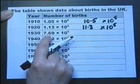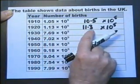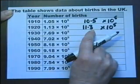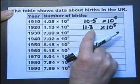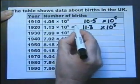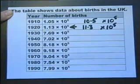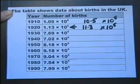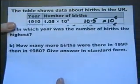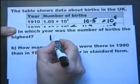And looking at the first part, 11.3 is the largest. So in fact this is the highest population in 1920. So 1920 is the answer.